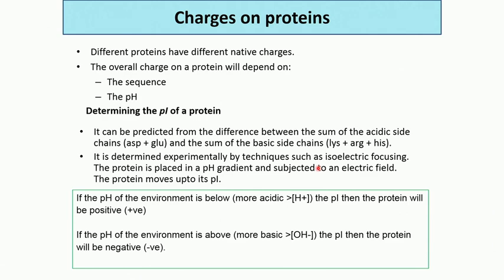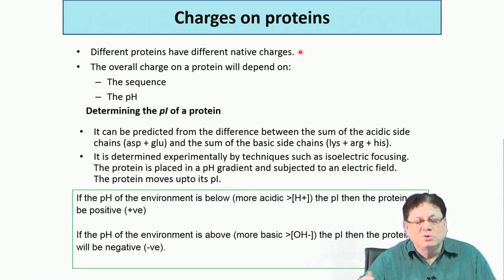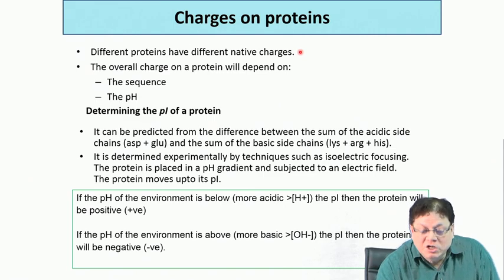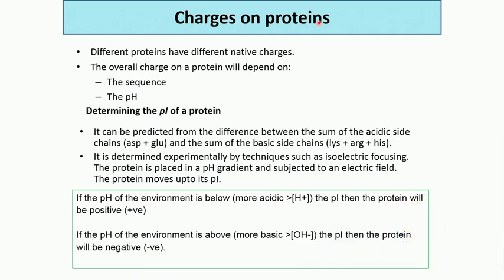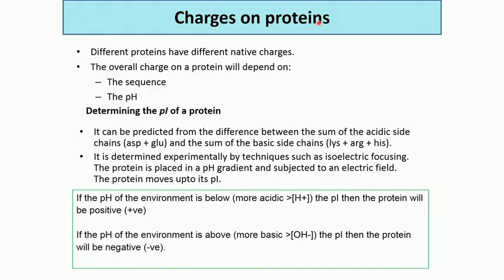In native gel electrophoresis, proteins move according to their intrinsic charge, which also depends on pH. Proteins, like amino acids, have an isoelectric point — a pH where the net charge is zero — and at this point the protein will not move. You can adjust the pH and run electrophoresis, varying the native charge on the protein to help separate them by native gel electrophoresis.